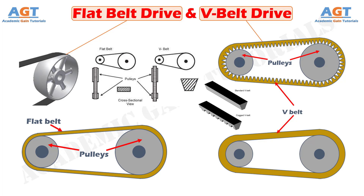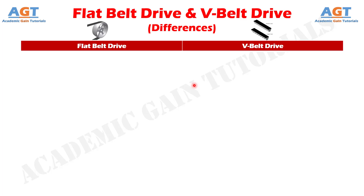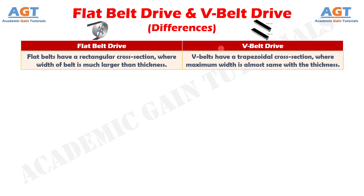So, let's look into the basic differences between flat belt drive and V-belt drive in a tabular form. Difference number 1: flat belts have a rectangular cross-section where width of belt is much larger than thickness, whereas V-belts have a trapezoidal cross-section where maximum width is almost the same as the thickness.